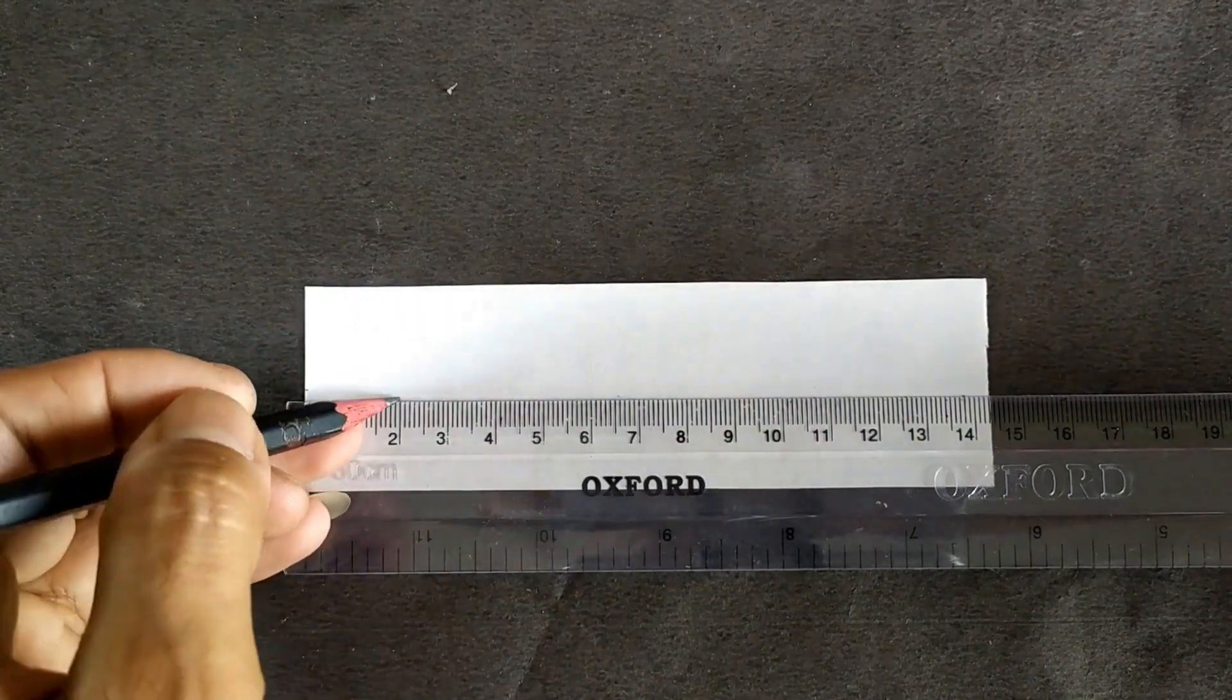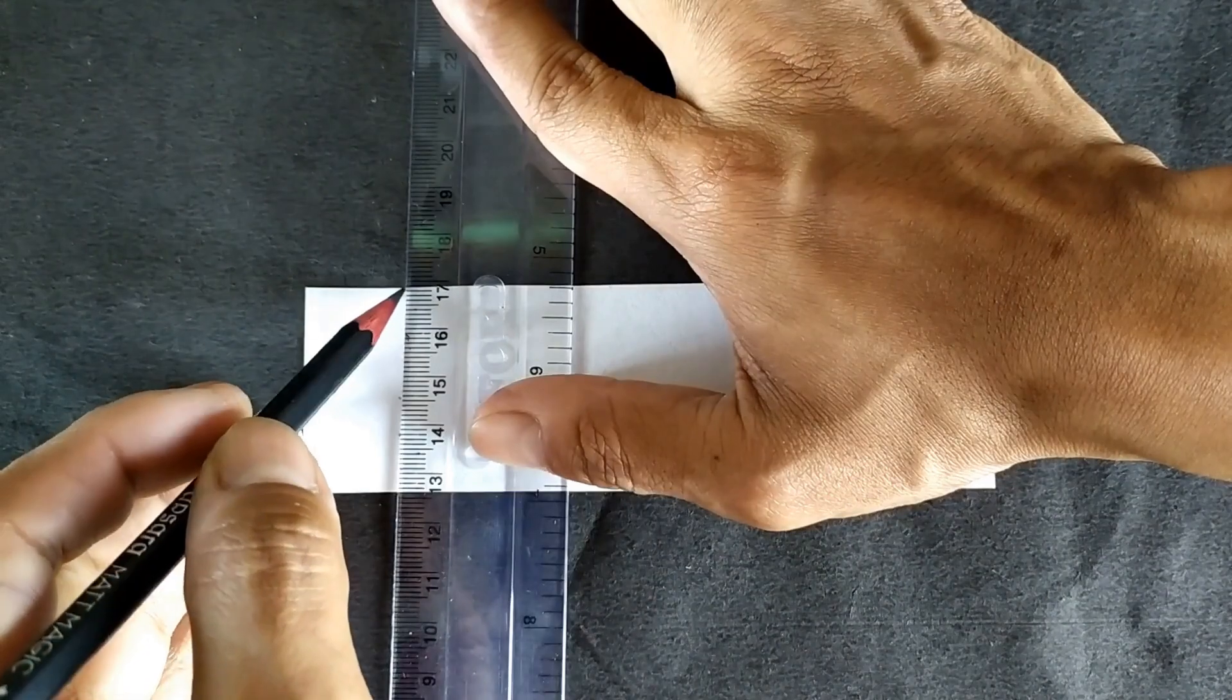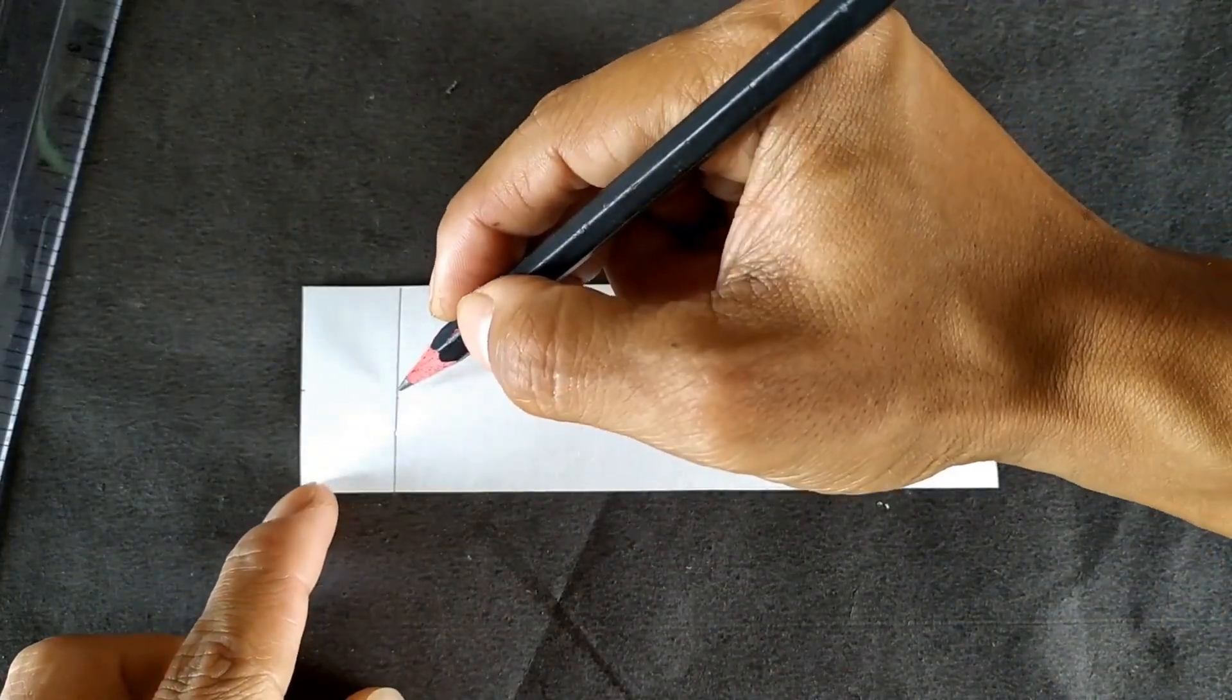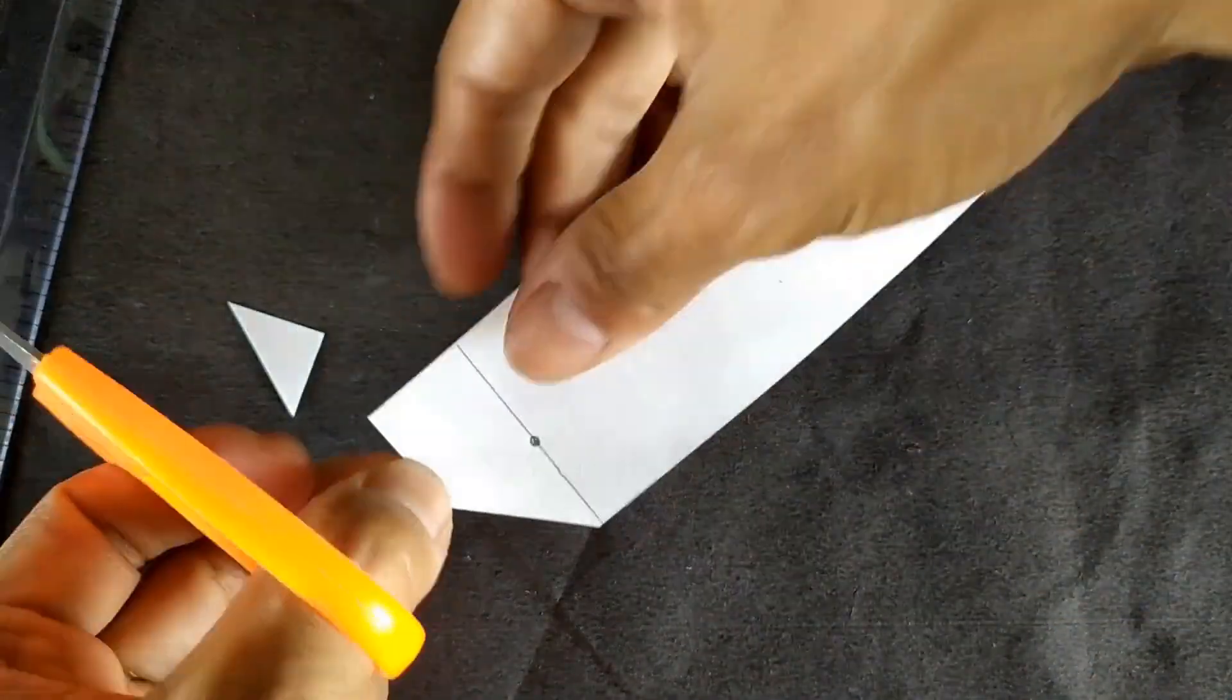Take a strip of Whatman filter paper pre-cut to approximately 5 by 20 cm. Draw a pencil line about 1 cm above one end of the paper. Make a V-cut below the pencil line, like so.